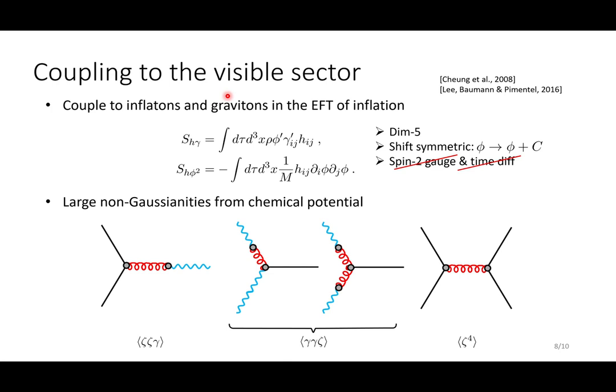Now, we have already made for ourselves lots of massive spin-2 particles. And in order to observe them, we have to couple it to the visible sector. This is most easily done by introducing two dimension 5 operators in the EFT of inflation, where this phi is again the inflaton, and this gamma is the tensor perturbation, which is the graviton. So there is this linear mixing term and this term that takes the form of H_ij times the partial_i phi, partial_j phi term.